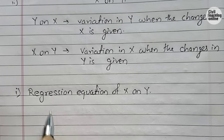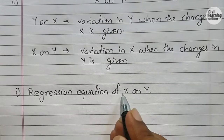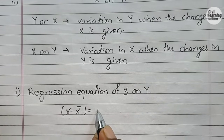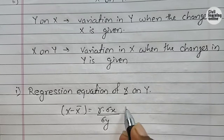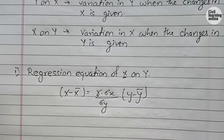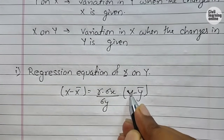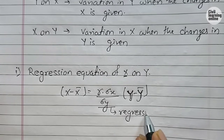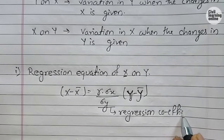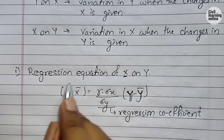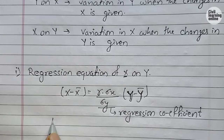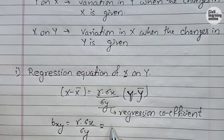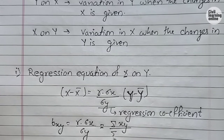Now let's learn the formulas based on the regression equation. Here we have the regression equation of x on y. The formula is: x minus x̄ equals r times (summation x / summation y) times (y minus ȳ). This is our regression equation of x on y. The regression coefficient is denoted by bxy, which equals r times (summation x / summation y), and is also equal to summation xy divided by summation y squared.